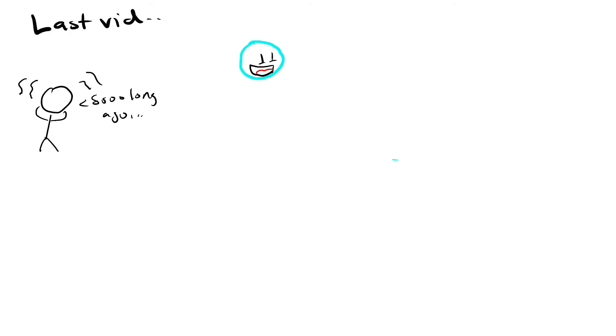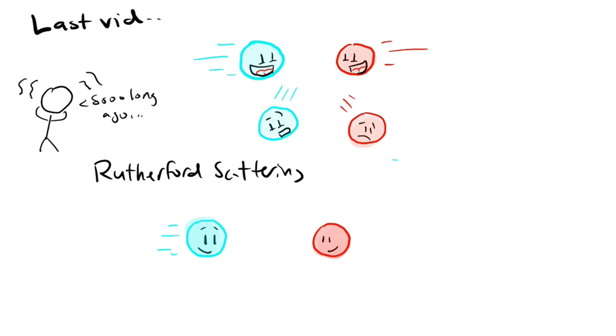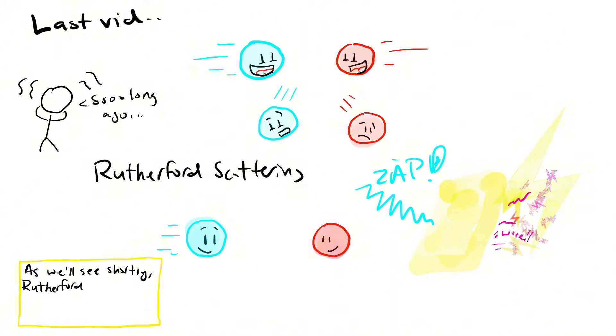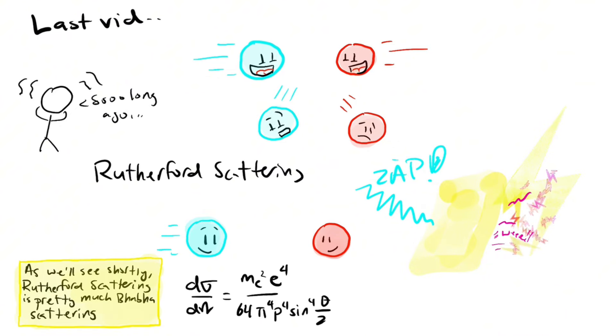In the last few videos, we calculated the first QED process, FOBA scattering, and now we can use the same tools to calculate a new kind of scattering process called Rutherford scattering. This is the kind of scattering Rutherford actually used to predict the existence of the proton by bombarding gold with electrons. We obtained this cross-section using classical electrodynamics. Let's see what we get when we use quantum electrodynamics.